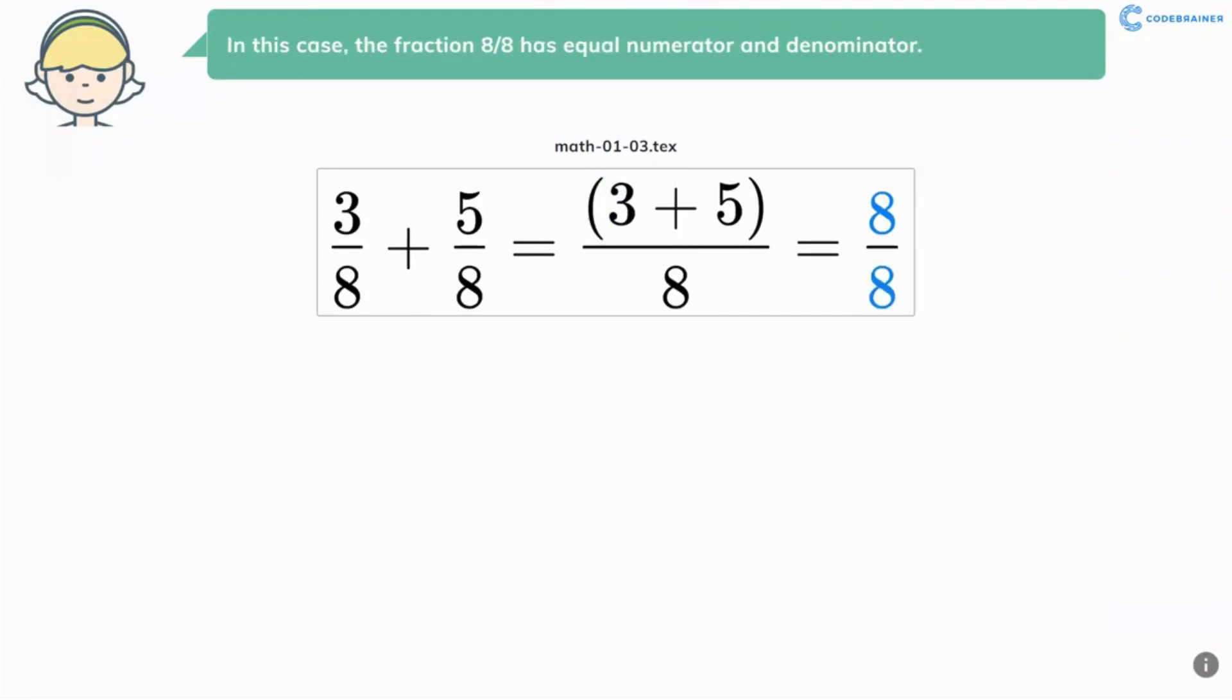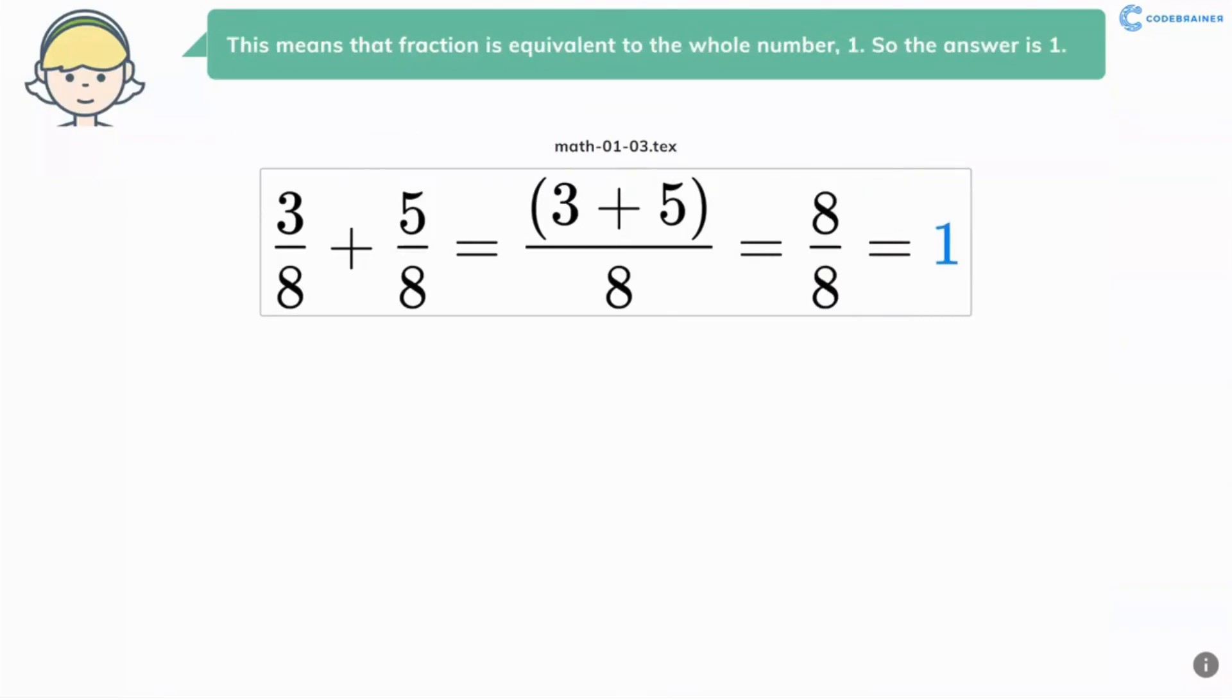In this case, the fraction 8 eighths has equal numerator and denominator. This means that fraction is equivalent to the whole number 1. So the answer is 1.